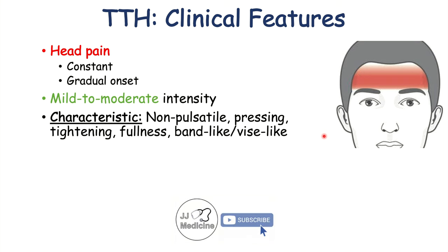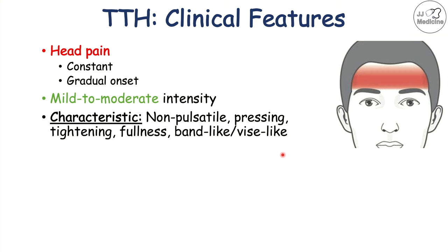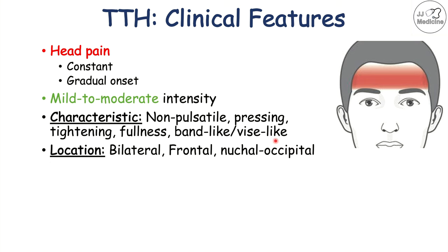This type of headache is going to have particular characteristics, including being non-pulsatile. Unlike migraine headaches, which are pulsatile or throbbing, the headache in tension type headache is non-pulsatile. It's described as a pressing, tightening, or fullness type of discomfort or pain. It may also be described as band-like — a band around the head being pulled, pressed, or tightened — or a vice-like pain. The location of this pain is going to be bilateral, occurring on both sides of the head, which differs from cluster and migraine headaches that are unilateral.